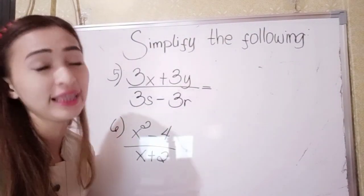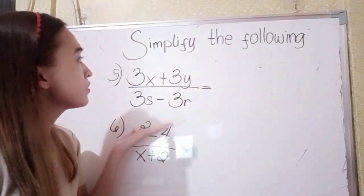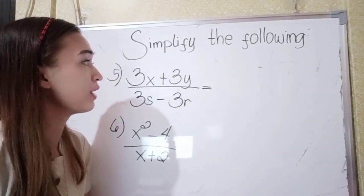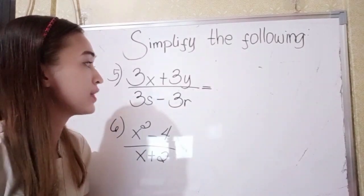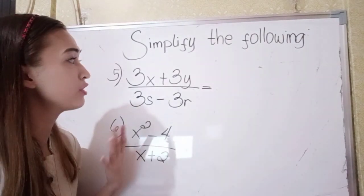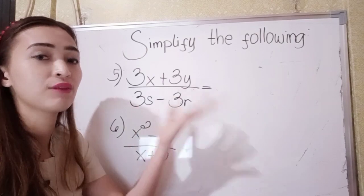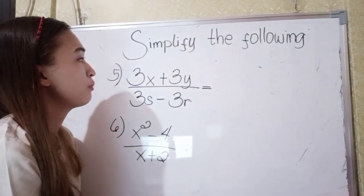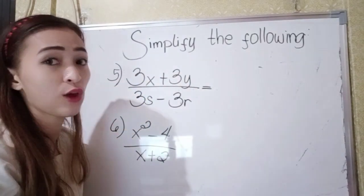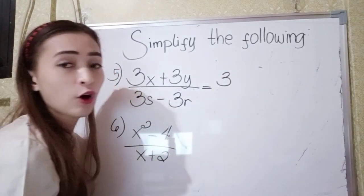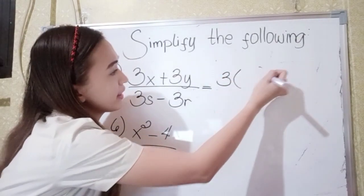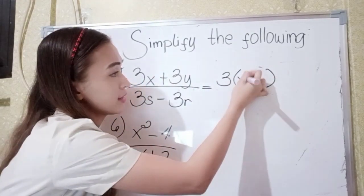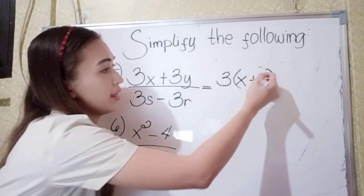In number 5 and 6, we have already the variable. So how about if we have the variable? In number 5, we have 3x plus 3y over 3s minus 3r. What we're going to do is factor first and then simplify. Let's have first the numerator. What is the common factor in 3x plus 3y? They have the same coefficient, 3. So 3 divided by 3 is x, plus 3y divided by 3 is y.